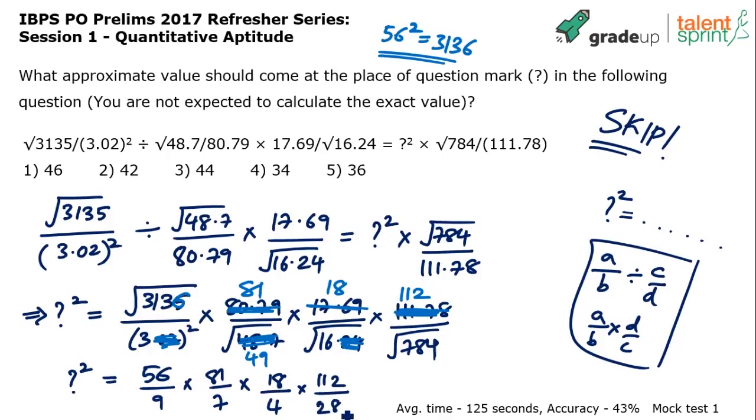28 here. How do I make it simple? So, 28 goes how many times here? 28 goes four times in my view. 4 into 28 is 112. Cancelled. 4 into 28 is 112. So, that 112 gets cancelled.